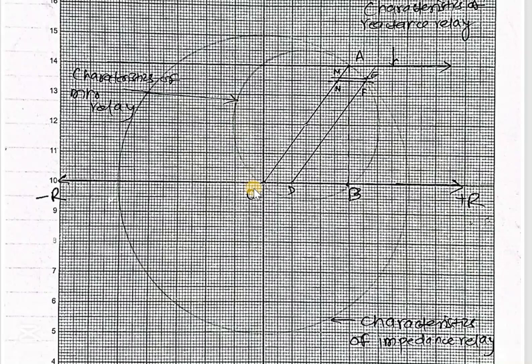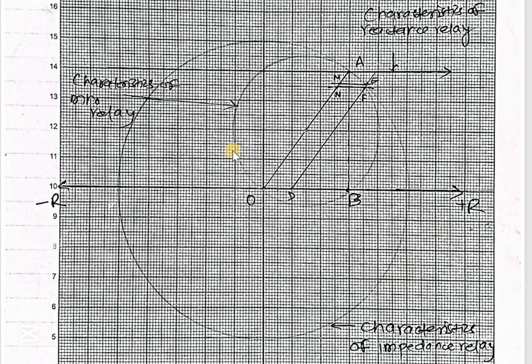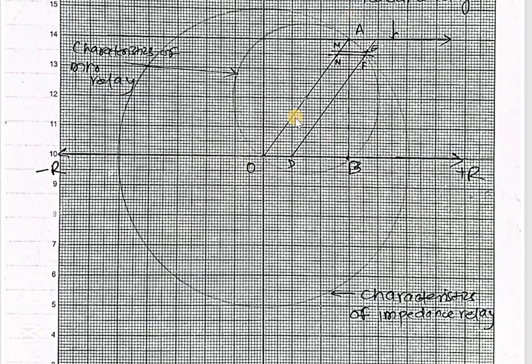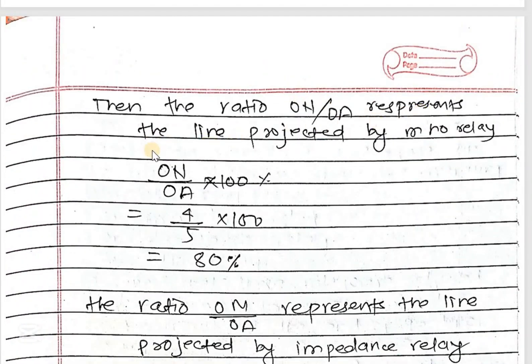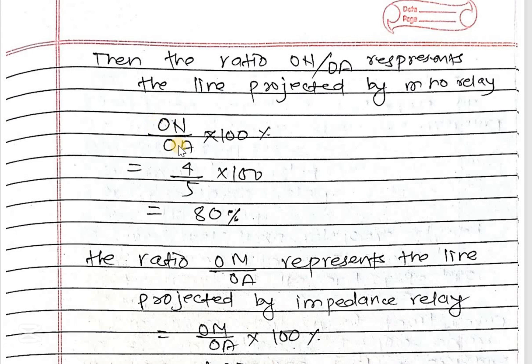This small circle is the characteristic of mho relay. Then measure all these distances. The ratio of ON and OA represents the line protected by mho relay.